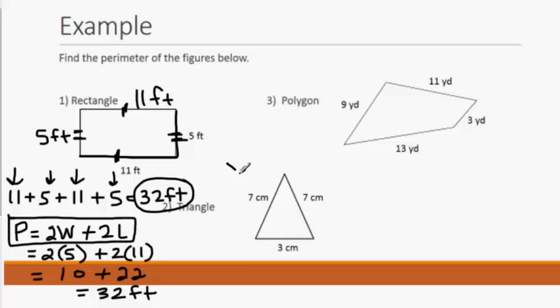So if we look over here at the triangle, again, to find the perimeter of a polygon, we simply need to add up the lengths of the sides. So we would say 7 centimeters plus 7 centimeters plus 3 centimeters. 7 plus 7 is 14, plus 3 gives us 17 centimeters.